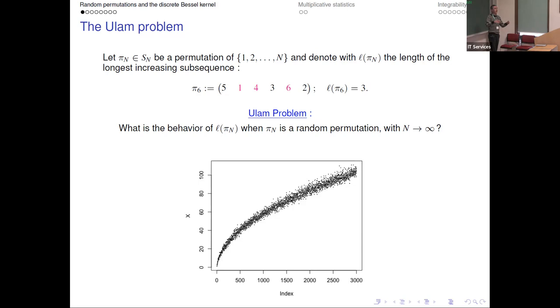You have a plot and I will explain the result. The spoiler is that this has to do with random matrices and the Tracy-Widom distribution.